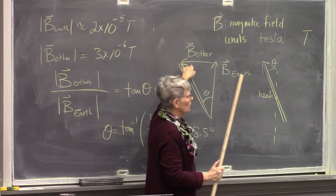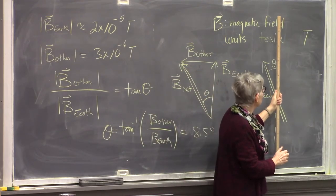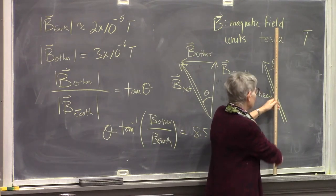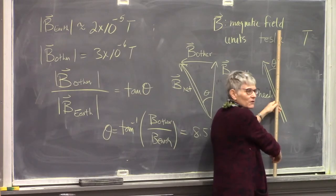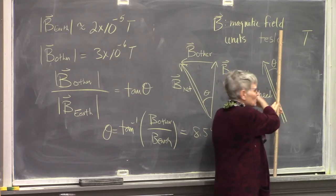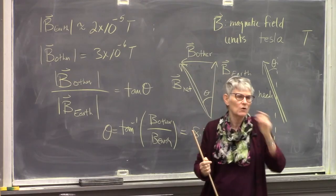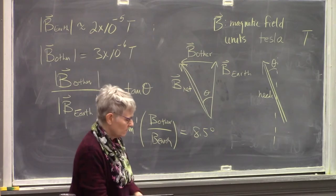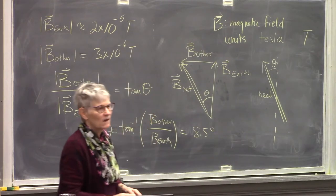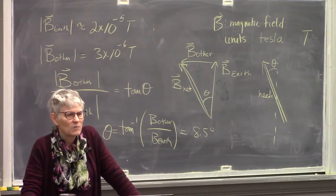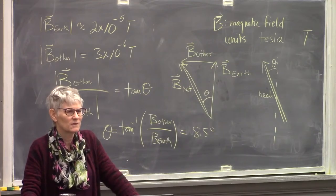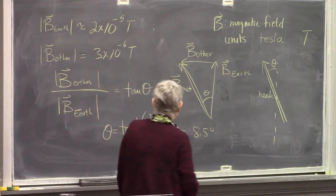So the magnetic field made by charged particles is in a direction perpendicular to the motion of the particles. Does that suggest a vector operation to you? Cross product — yes, that's right.